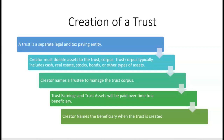Besides donating assets to the trust, the creator will also name a trustee to manage the trust corpus. The creator has to name a trustee because the creator can no longer manage these assets — they will no longer belong to the creator. Trust earnings and trust corpus will be paid over time to the beneficiaries of the trust, which could be one or multiple beneficiaries.